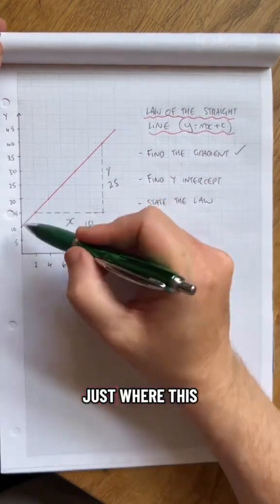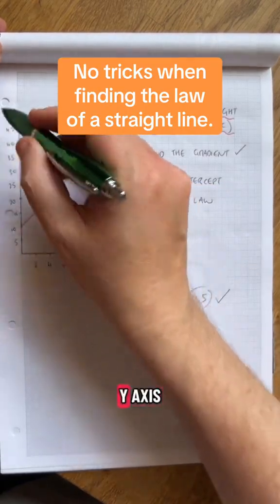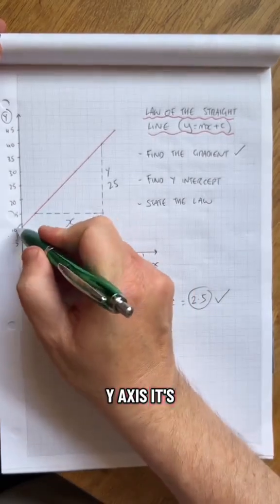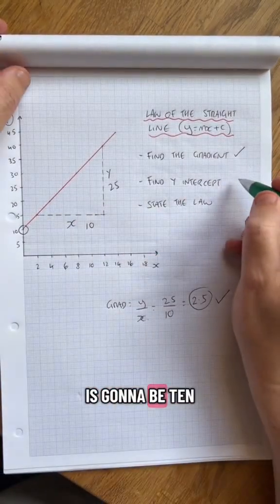The intercept is just where this line crosses the y-axis. This is the y-axis. It's 10. So that is going to be 10.